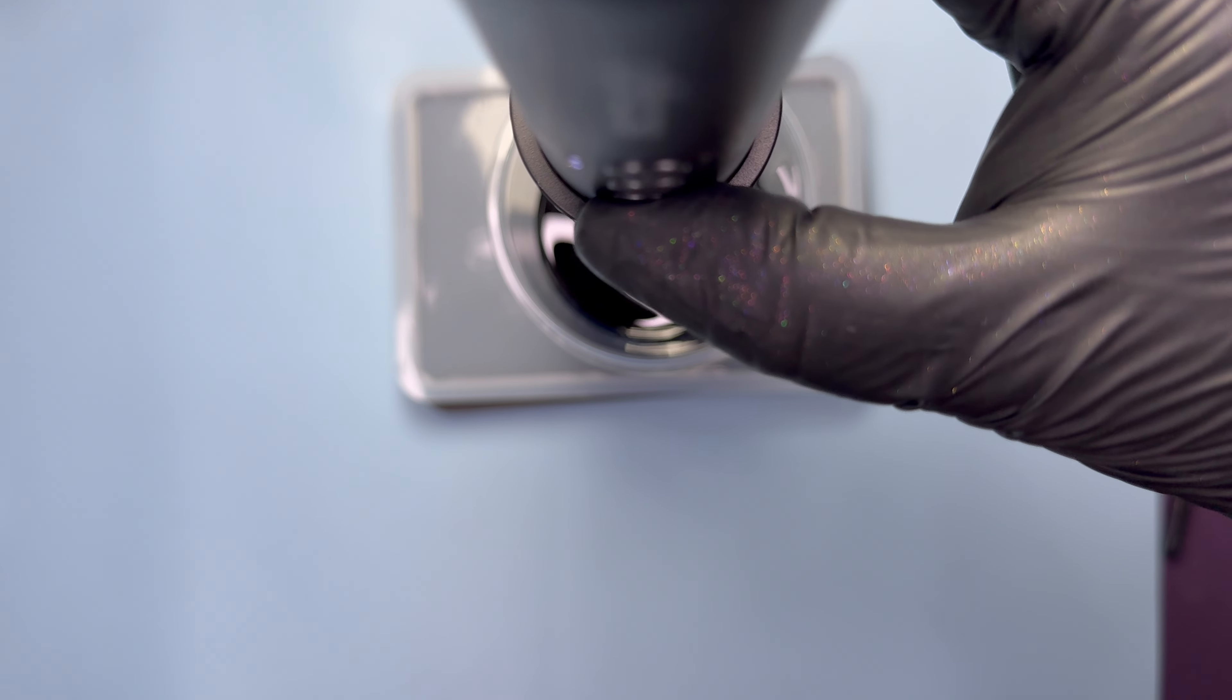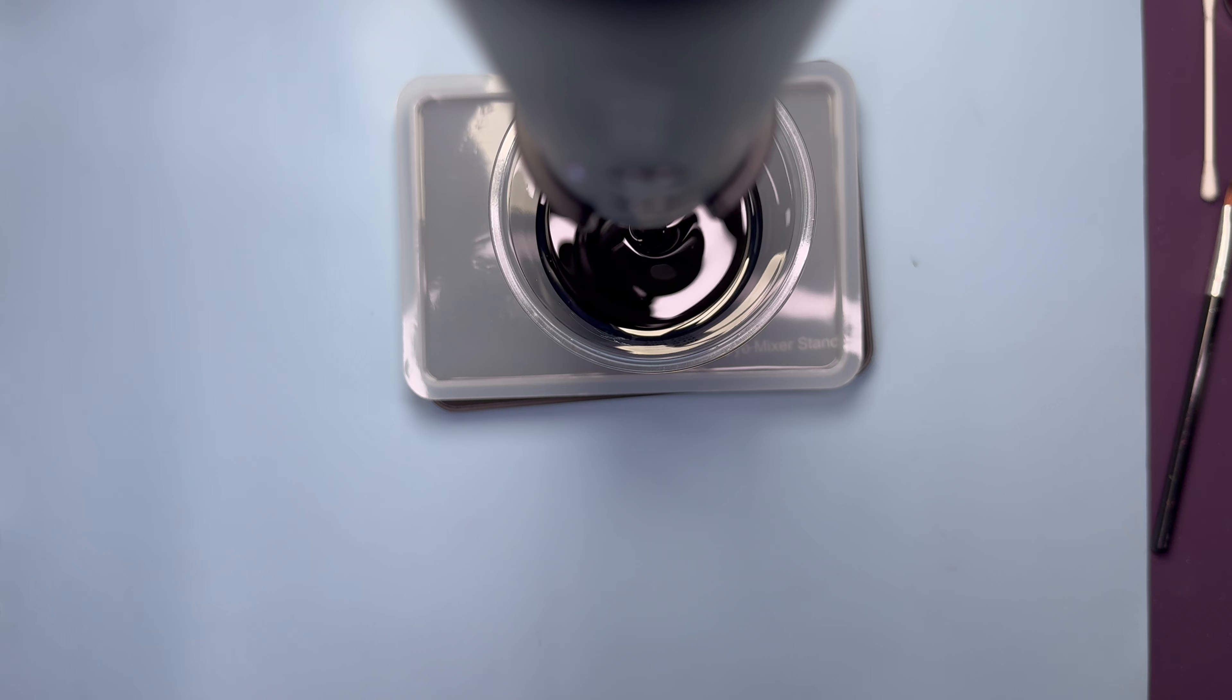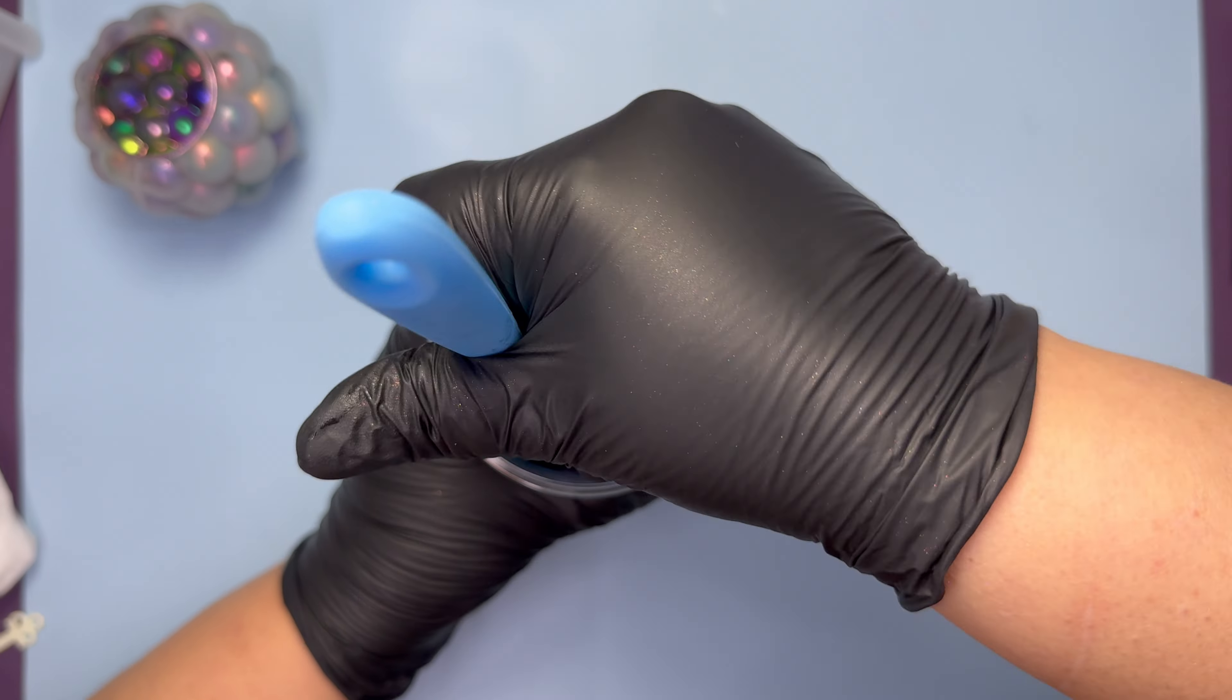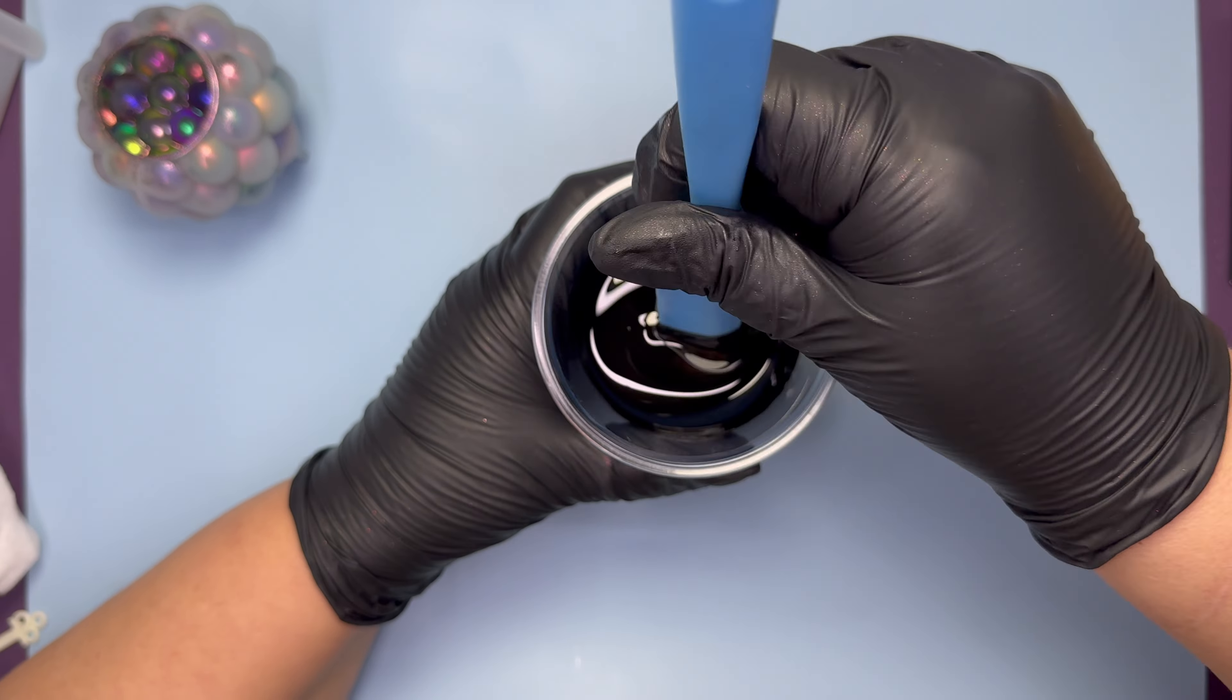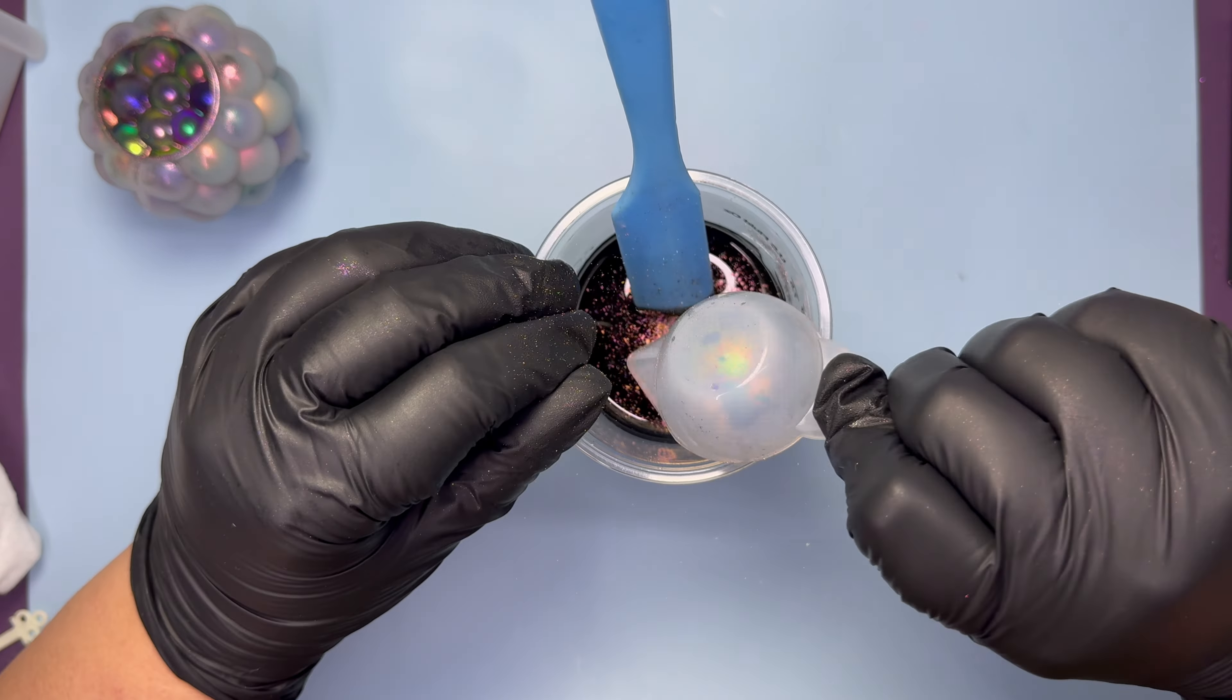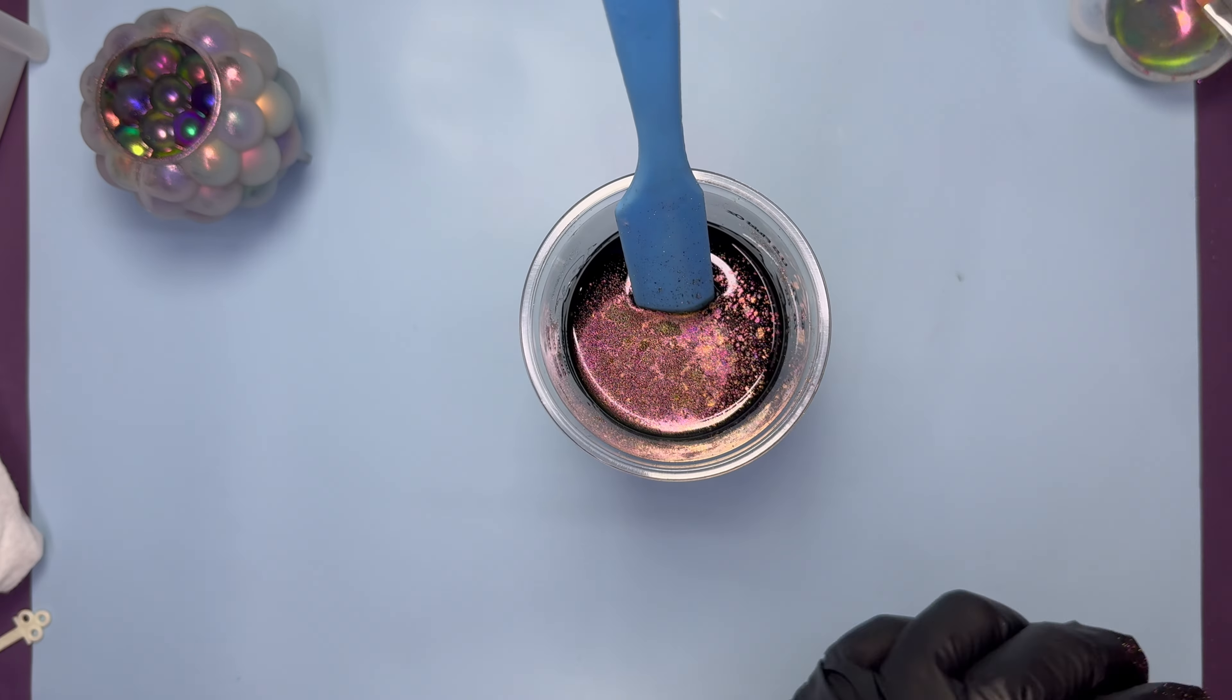This mixing machine from Istoyo is fantastic—no more tired wrists and no bubbles. I have a discount code in my description box. As I still have some pigment left over in the cup, I might as well use it with the resin. Not that it will do anything, but it sure looks pretty floating.